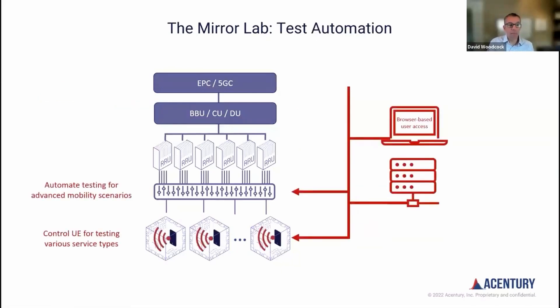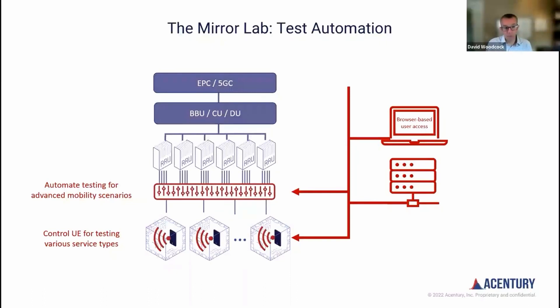Next, the various call types are automatically started on the devices under test, and the RAN equipment broadcasts signals into the RF switch matrix. The orchestration layer controls the RF switch matrix to execute the RF portion of the tests without human involvement.